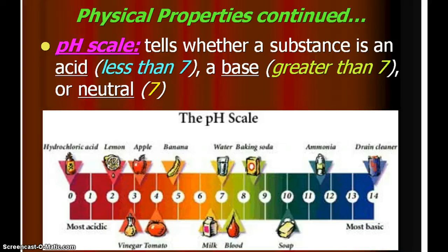The pH scale tells us whether a substance is an acid, a base, or neutral. The pH scale goes from 0 to 14. Zero through 7 is considered acidic; 7 exactly is neutral; and 7 to 14 is a base. Most things we consume tend to be on the acidic side; cleaning products are on the basic side; water is exactly neutral. We'll do a whole unit on acids and bases in the second semester.